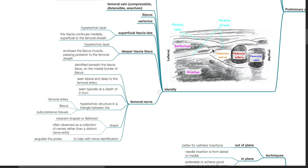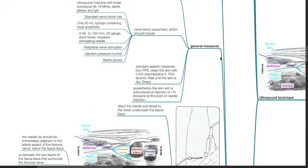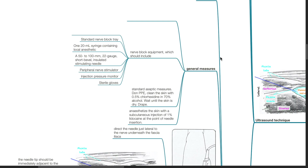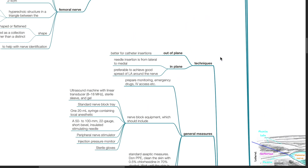The nerve's shape is crescent or flattened, and it is often observed as a collection of nerves rather than a distinct nerve entity. To help with nerve identification, angulate the ultrasound probe. Technique: femoral nerve block can be done out of plane or in plane. Out of plane is better for catheter insertions. If in-plane technique is used, needle insertion is from lateral to medial. The in-plane technique is preferable to achieve good spread of LA around the nerve.